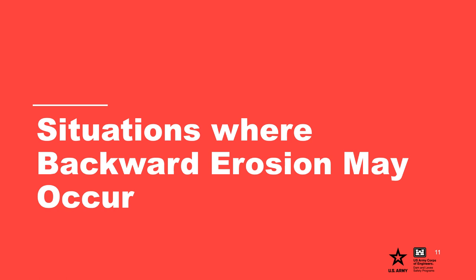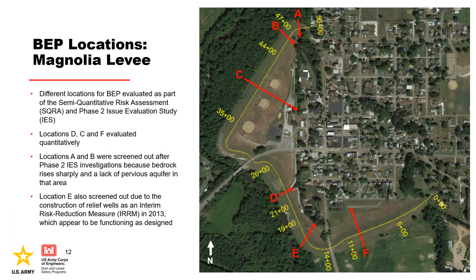During a risk assessment, multiple failure pathways will be identified and may need to be evaluated. This example provides locations for backward erosion piping considered for Magnolia levee, where some pathways were screened, some assessed semi-quantitatively, and some required a quantitative assessment. Finding the weak link in the foundation based on geomorphology, previous levee performance, and other factors is critical.